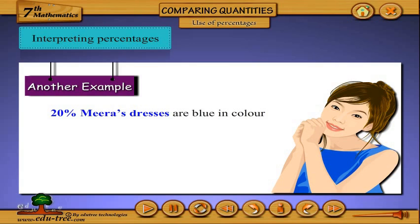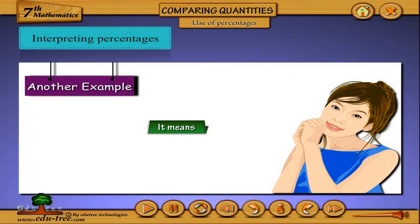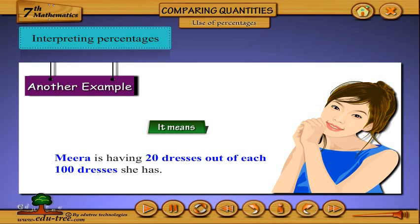Another example: 20% of Mira's dresses are blue in color. Here by 20% we mean 20 out of 100, or we write it as 20 by 100. It means Mira is having 20 dresses out of each 100 dresses she has.